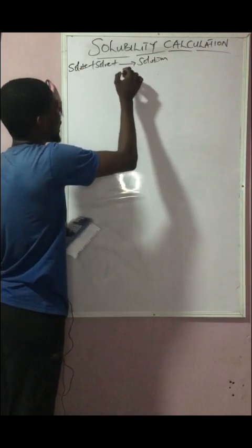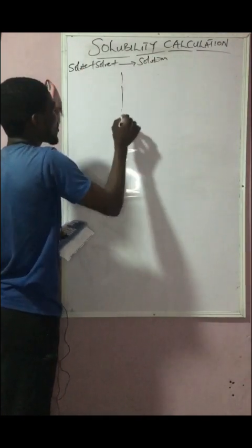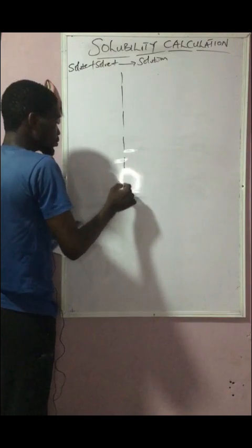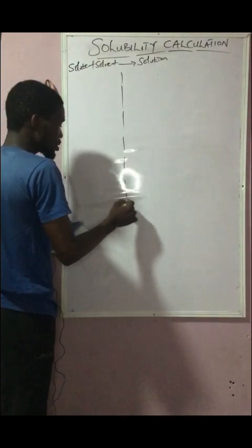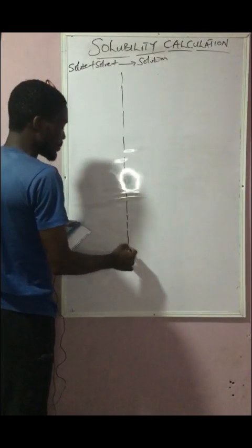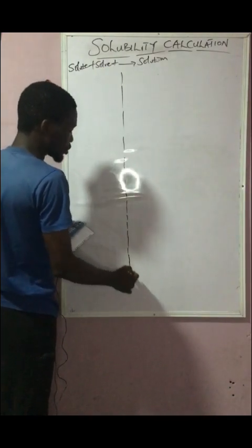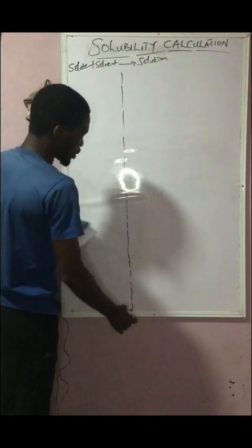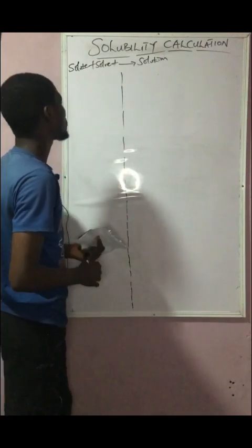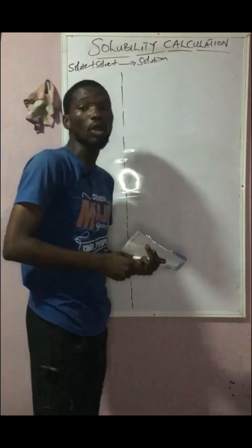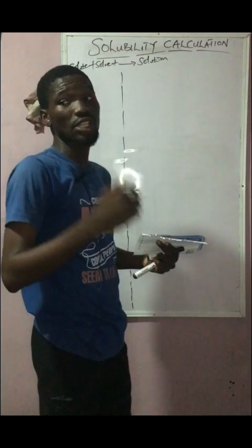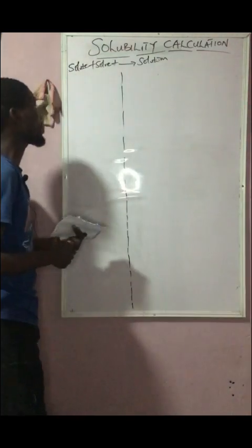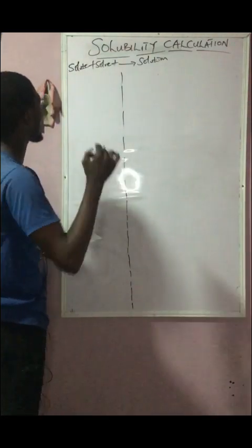Don't forget the definition: the solubility of a solute in a solvent at a particular temperature is the maximum amount of solute in grams or moles that will saturate one dm³ of solvent.